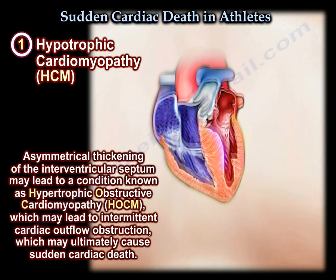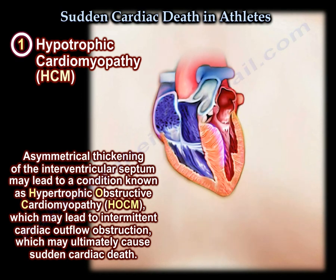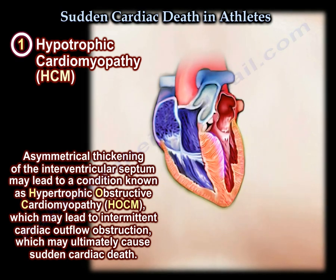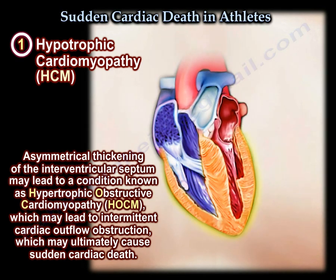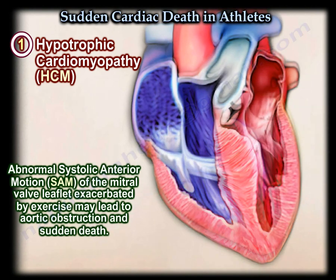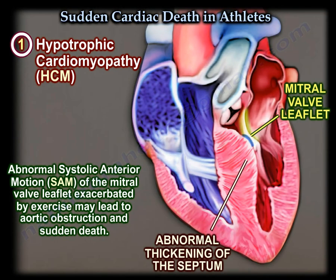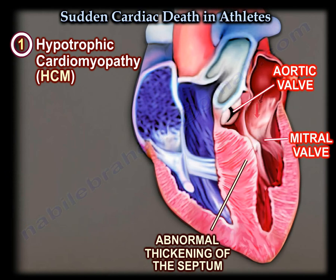Asymmetrical thickening of the interventricular septum may lead to a condition known as hypertrophic obstructive cardiomyopathy, which may lead to intermittent cardiac outflow obstruction, which may ultimately cause sudden cardiac death. Abnormal systolic anterior motion of the mitral valve leaflet exacerbated by exercise may lead to aortic obstruction and sudden death.